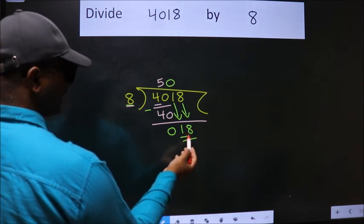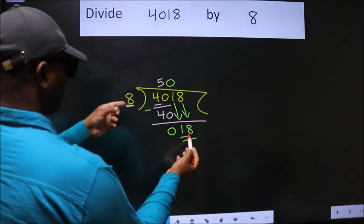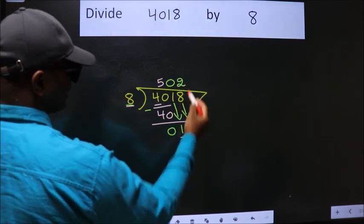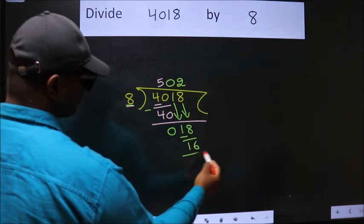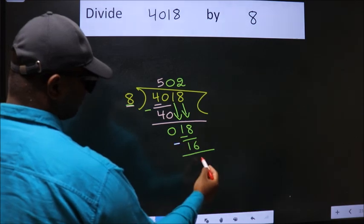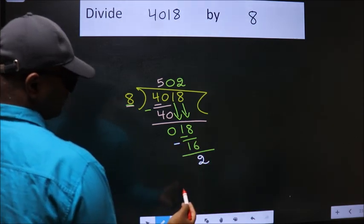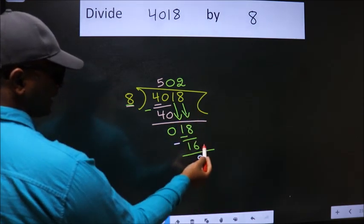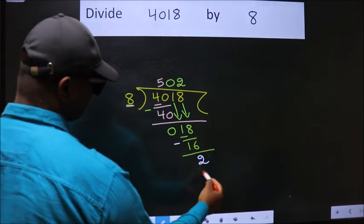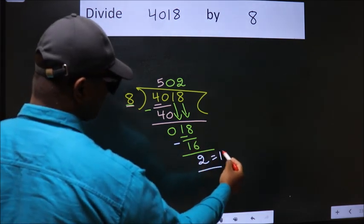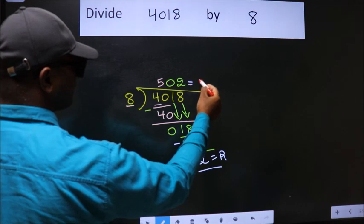A number close to 18 in the 8 table is 8 twos 16. Now we subtract. We get 2. No more numbers to bring down. So we stop here. This is our remainder. This is our quotient.